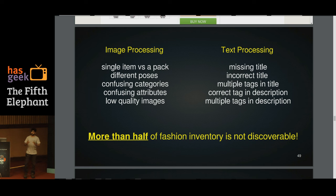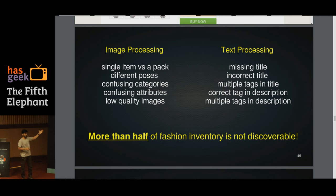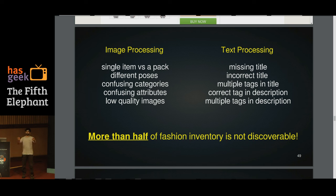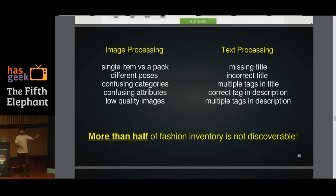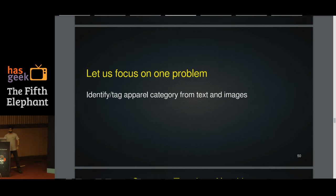My reasoning behind showing all these examples is to convince you it's a really hard problem. You have to do both image processing and text processing. For image processing, you need to solve whether it's a single item or a pack, handle different poses, handle confusing categories, and more. For text, you need to handle single or multiple categories and whether categories appear in title or description. Doing these two blocks alone is not sufficient — you need a confluence of both. If you can figure out a solution, there is potential to clean more than half of the fashion commerce inventory.